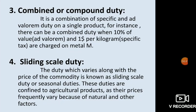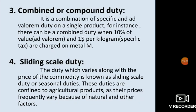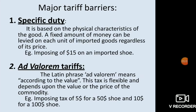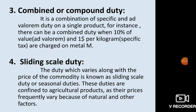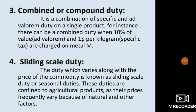Combined or compound duty is a combination of specific duty and ad valorem duty on a single product. For instance, a combined duty could be ten percent of the value (ad valorem) and one dollar per kilogram (specific) charged on a metal. So for some products the tax is based on physical characteristics, and for others it is based on the value or price of the goods.